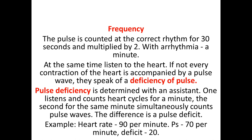Frequency of pulse: if the patient has a correct rhythm, count for 30 seconds and multiply by two; if arrhythmic, count for a full minute. Sometimes, while simultaneously listening to the heart, if not every contraction of the heart is accompanied by a pulse wave, this is called pulse deficiency. Pulse deficit is determined with an assistant: one person listens and counts heart rate for a minute, while the second simultaneously counts pulse waves — the difference is the pulse deficit. For example, heart rate 90 per minute and pulse 70 per minute means a deficit of 20. It may occur in congestive heart failure or atrial fibrillation.